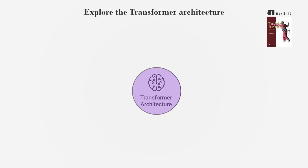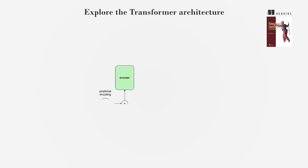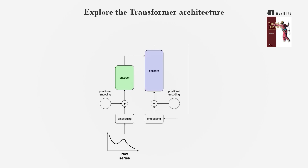The transformer architecture, introduced in 2017, is crucial for models in natural language processing and time series forecasting. It consists of an encoder, which learns data relationships, and a decoder, which generates predictions. Embedding layers and positional encoding are essential for understanding the order of data, which is crucial for analyzing time series.